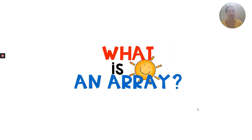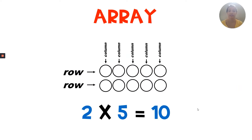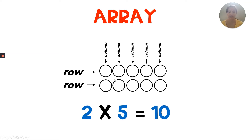What is an array? An array has rows that go from side to side and columns that go from top to bottom or bottom to top. An array relates to a multiplication equation. The rows are the number of groups, so that would be the first factor — that would be the two, two rows. The second factor is five, and that represents how many are in each group, so it equals the number of columns: one, two, three, four, five columns.